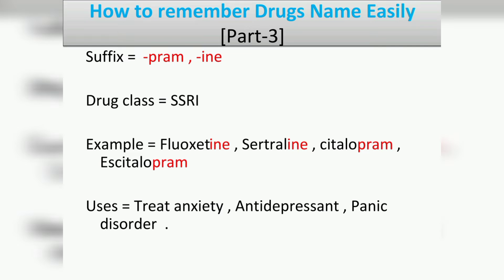The next suffix is '-pram' (P-R-A-M) or '-ine' (I-N-E), which belongs to the drug class selective serotonin reuptake inhibitors (SSRIs). Examples include fluoxetine, sertraline, citalopram, and escitalopram. Their uses are to treat anxiety, depression, and panic disorder.